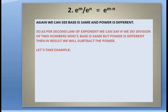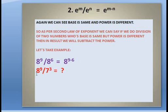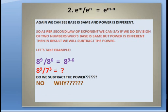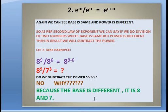Let's take one example: 8 to the power 9 divided by 8 to the power 6. Base is the same, so we subtract the powers: 8 to the power 9 minus 6. Now another example: 8 to the power 9 divided by 7 to the power 3. Do we subtract the powers here? No, completely no — because the base is different: 8 and 7.